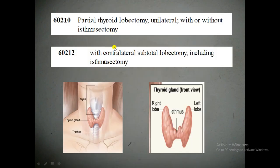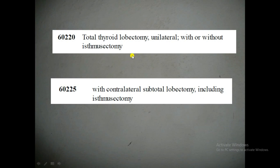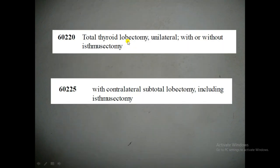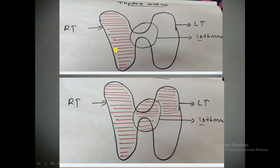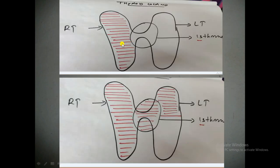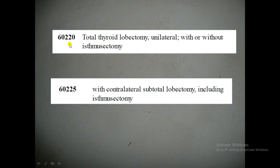For CPT 60220 — total thyroid lobectomy unilateral — the physician removes the complete lobe. If the nodule is on the right side, the complete right lobe is removed; if on the left, the complete left lobe is removed. Along with the complete removal of one lobe, the physician may or may not remove the isthmus. So 'with or without isthmectomy' applies here as well. This is the procedure for CPT code 60220.